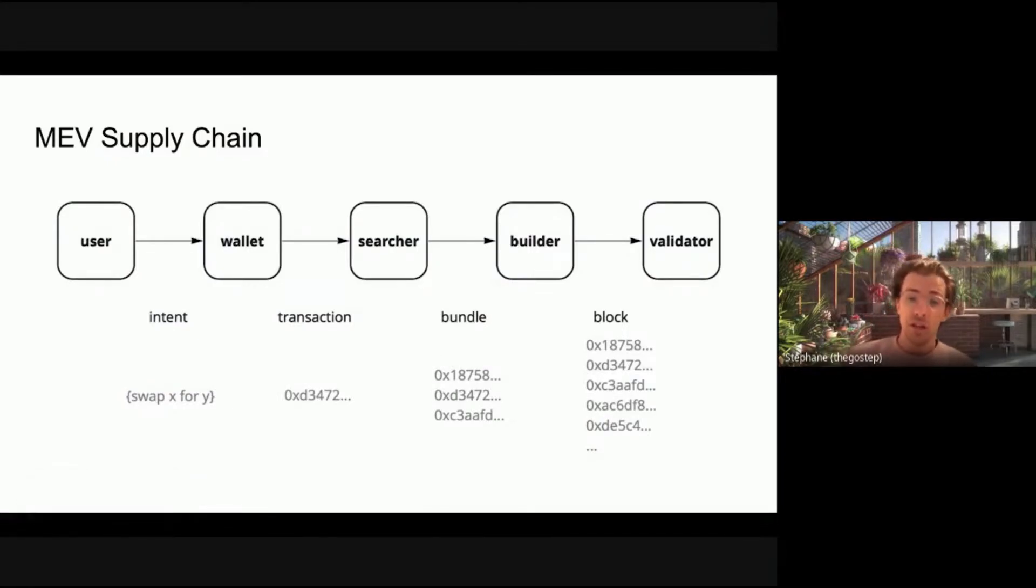Now the big change with the merge is the introduction of yet another role in the supply chain, which is the role of the block builder. So this really is the separation of a role that the miners have had put together in the past. On Ethereum builders and validators together, we're sort of playing the role of the miner of aggregating the transactions, aggregating the bundles, producing a block, and then proposing it to the network. Now with proof of stake, what we have is a new system called proposer builder separation.